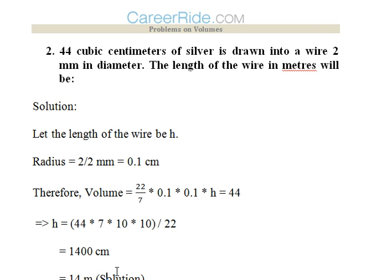Now we would convert it into centimeter just because the volume is given in cubic centimeters. So 1 mm would be 0.1 cm just because there are 10 mm in 1 cm.